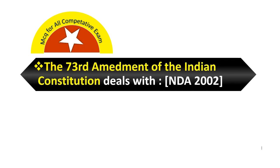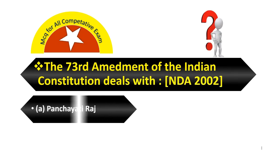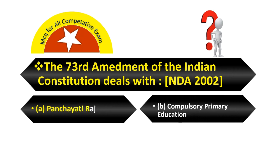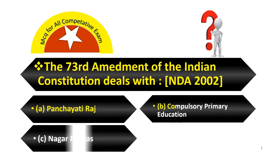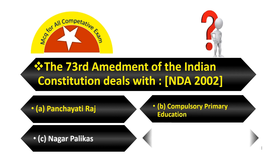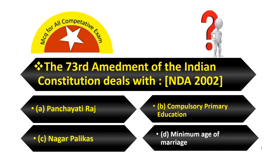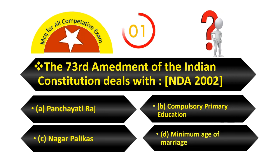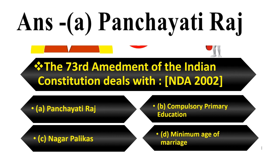The 73rd Amendment of the Indian Constitution deals with: Option A, Panchayati Raj. Option B, Compulsory primary education. Option C, Nagar Palikas. Option D, Minimum age of marriage. Your answer is Panchayati Raj.